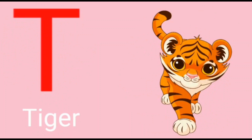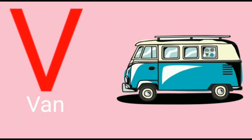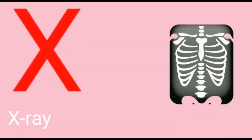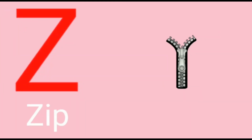T for tiger, U for unicorn, V for van, W for woman, X for x-ray, Y for yak, Z for zip.